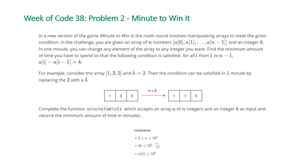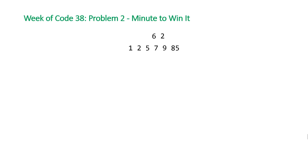Note the constraints on this problem: the length of the array is between 2 and 10^5, k is less than 10^5, and the absolute value of all elements in the array is less than 10^5. Let's take a look at the example that HackerRank provided.